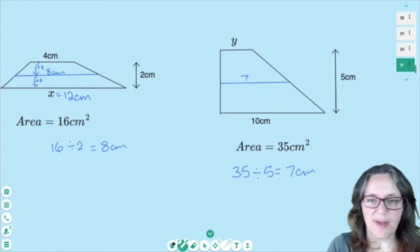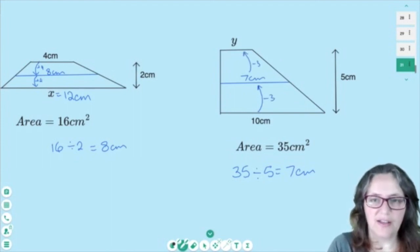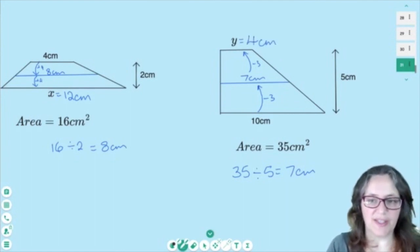So that means my length across the middle is 7 cm. Look at the gaps. I did 10, take 3 to get 7. So I'll just take another 3. 7 take 3 is 4. So Y is going to be 4 cm.